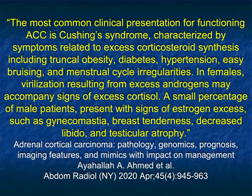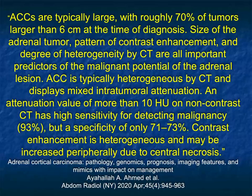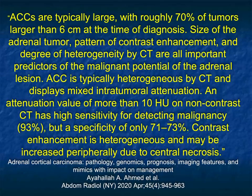Clinical history is important — incidental findings may only become clear when you speak to the patient and realize other symptoms were present. In an article by Ahmed, adrenal cortical carcinoma is large in 70% of cases, over 6 centimeters. Size of tumor, pattern of enhancement, and degree of heterogeneity by CT are all important predictors of malignant potential. ACC is typically heterogeneous by CT with mixed intratumoral attenuation. CT has high sensitivity for detecting malignancy but specificity is relatively low — think about that ganglioneuroma.